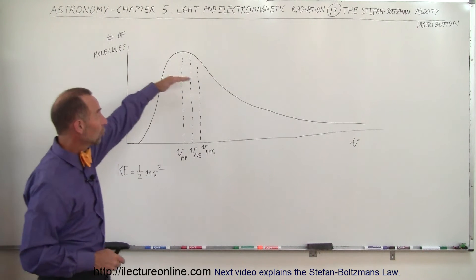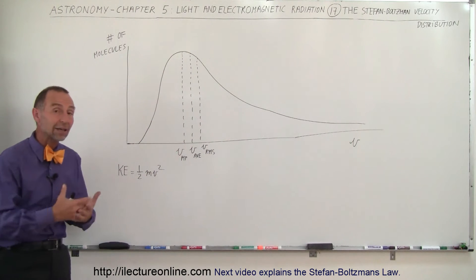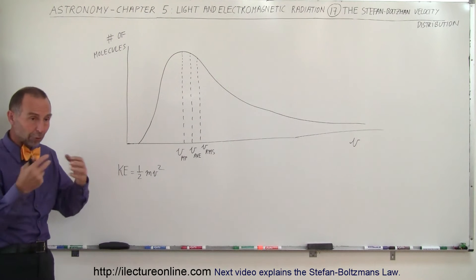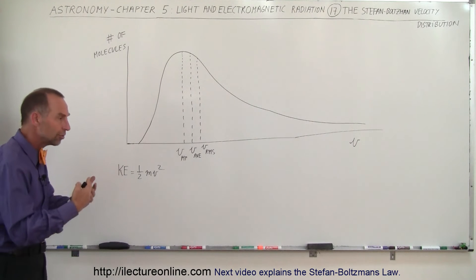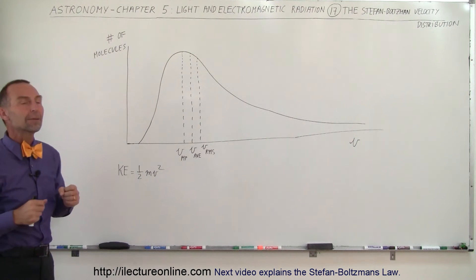So you can see that in the distribution, there's some molecules that are traveling quite fast, therefore carry much higher velocities. And so the agitation of those atoms going back and forth, hitting each other, bumping around like that at these high velocities would cause large accelerations. Accelerations, of course, would cause electromagnetic radiation to be emitted.